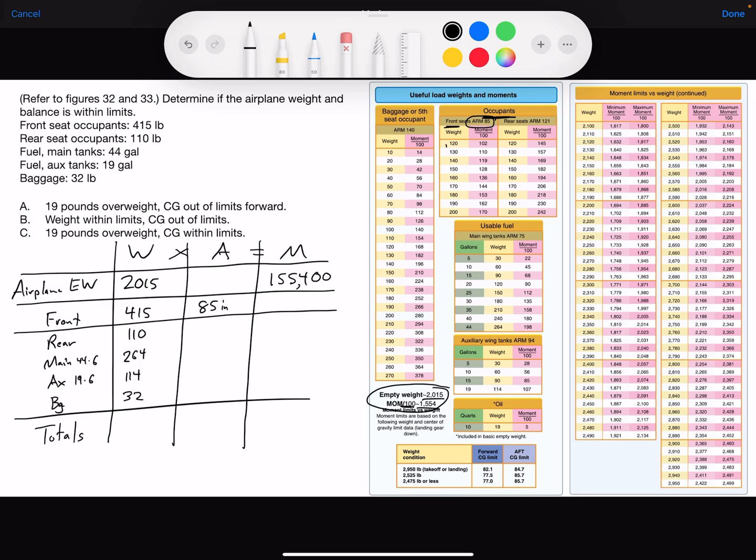Rear seat we have 110 pounds. Here's the rear on the table, I don't see 110, so we'll do the same thing. We'll take the weight of 110 multiply by the arm of 121 inches to give us a moment of 13,310.